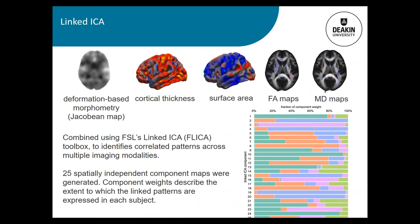We took all our brain volume data, cortical thickness, surface area, as well as two white matter microstructural measures — fractional anisotropy (FA) and mean diffusivity (MD) — and extracted 25 spatially independent components, or brain patterns, that co-varied together. Some components were heavily driven by one particular metric, such as surface area, while others had a fairly mixed contribution from different imaging modalities. These were done in a completely data-driven way.